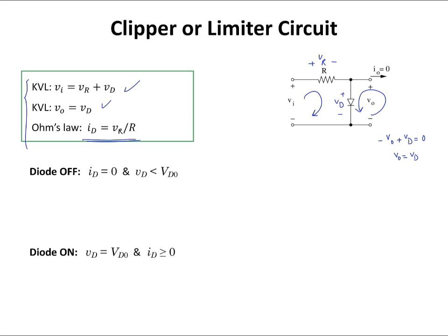I have one diode, so there are two possible states: the diode is either off or on. If the diode is off, the current through the diode equals zero (using the piecewise linear model) and the voltage across the diode is less than VD0. Since VI = VR + VD and VD = Vout, I can write VI = VR + Vout, and substituting VR = R × ID + Vout, VI becomes equal to Vout when ID = 0.